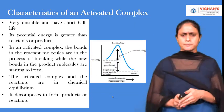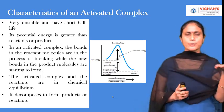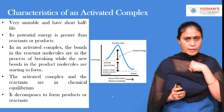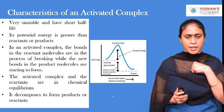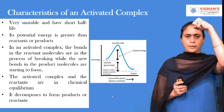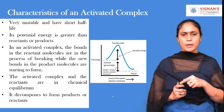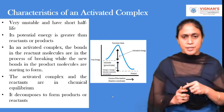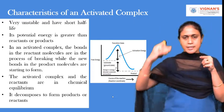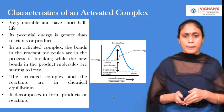Looking at this figure, you can see that substrate molecules are present at the ground state. After gaining a certain amount of energy called activation energy, the reactant molecules move towards the transition state. At the transition state, the highest amount of potential energy is present. After that, there is a gradual loss of energy and the products are formed.